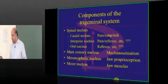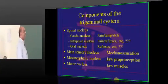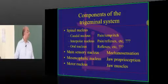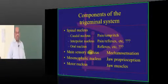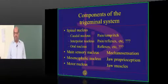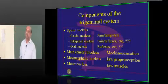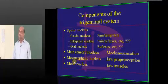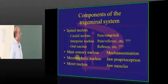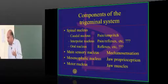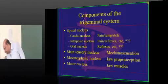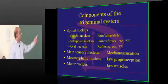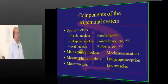Looking at the trigeminal system, we have various components in the trigeminal nuclei. We have one spinal nucleus, one main sensory nucleus, a mesencephalic nucleus in the midbrain, and one motor nucleus. The reason there are so many nuclei is that the trigeminal is a very large cranial nerve with many functions, and those functions have been differentiated into each of these different nuclei. The spinal nucleus of the trigeminal has a caudal part, an interpolar part, and an oral part.